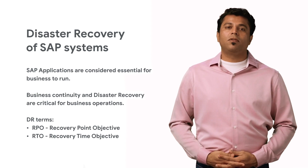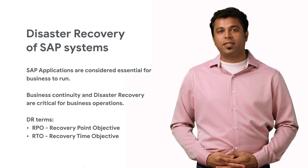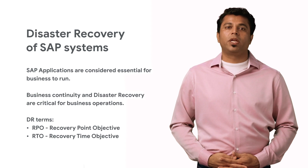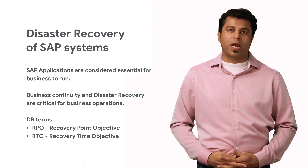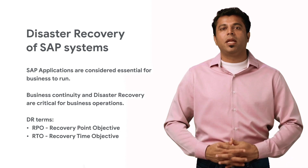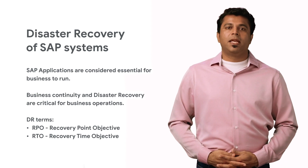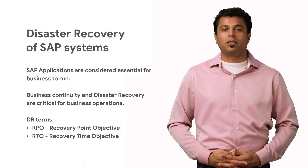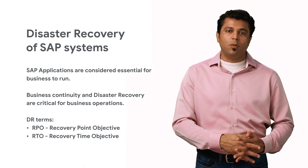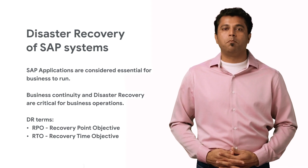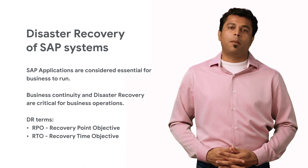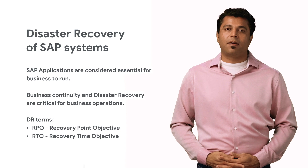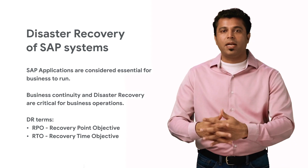Recovery point objective is the amount of data loss a business is willing to accept in the event of a disaster, meaning transactions that are being recorded in the system during normal business operations on the primary site that the business is willing to live without in case of a disaster. These very transactions will then need to be either manually or systematically re-entered in the system on the DR site. Recovery time objective, on the other hand, is the amount of time the business is willing to wait for these systems to be up and running on the DR site.